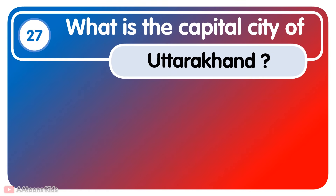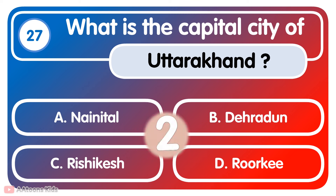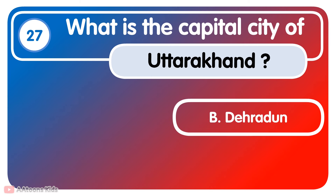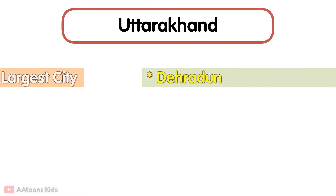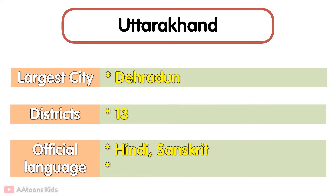What is the capital city of Uttarakhand? The largest city in Uttarakhand is Dehradun. It has 13 districts. Its official languages are Hindi and Sanskrit.